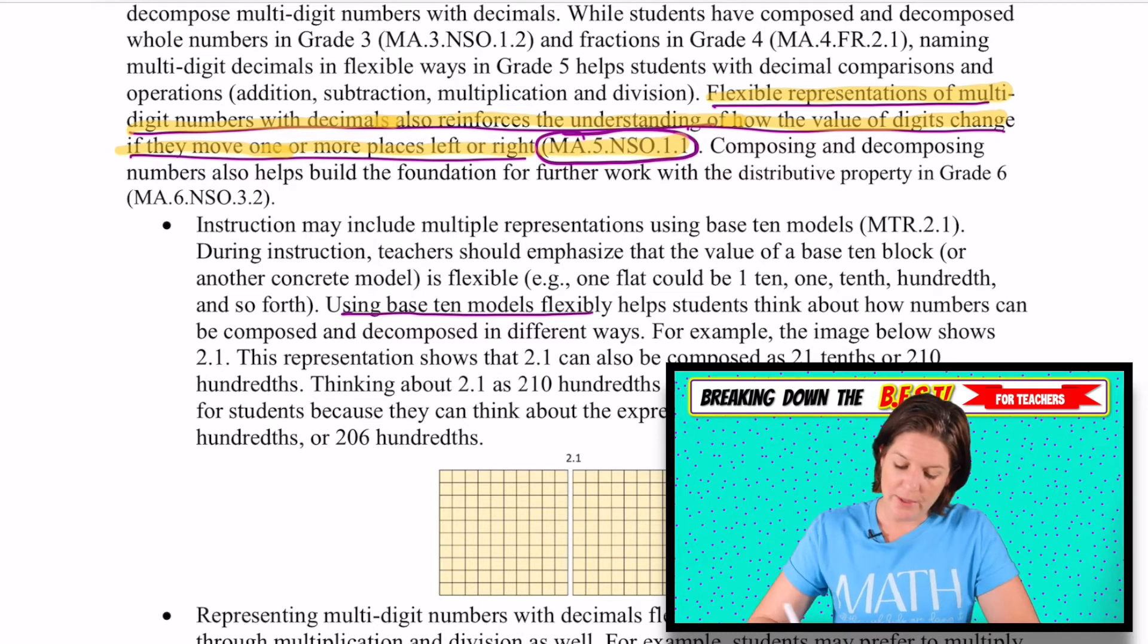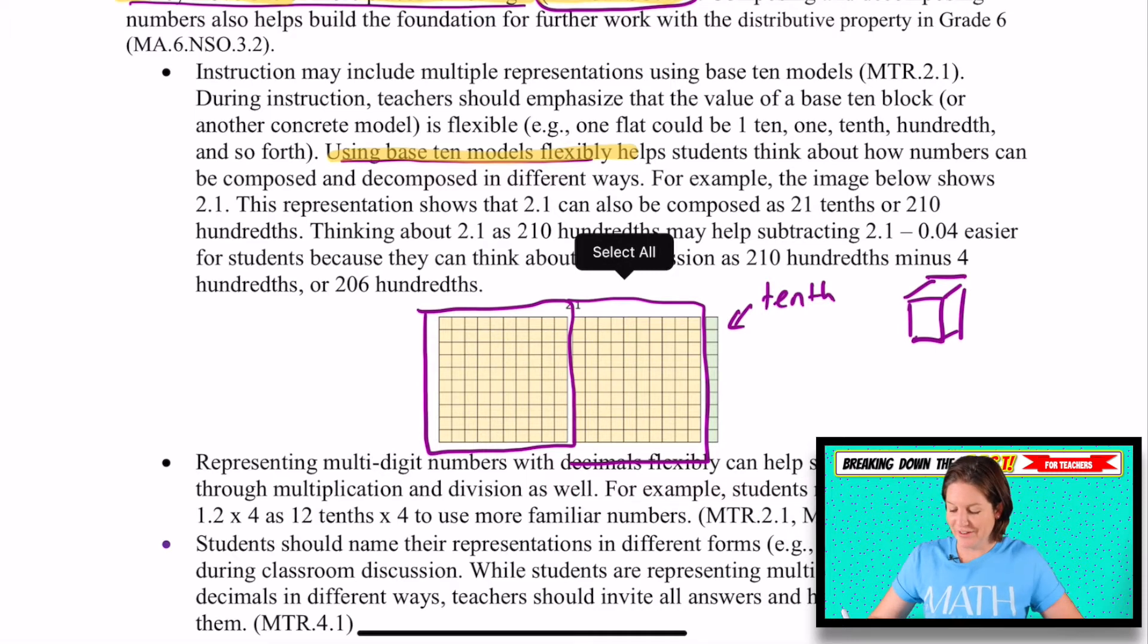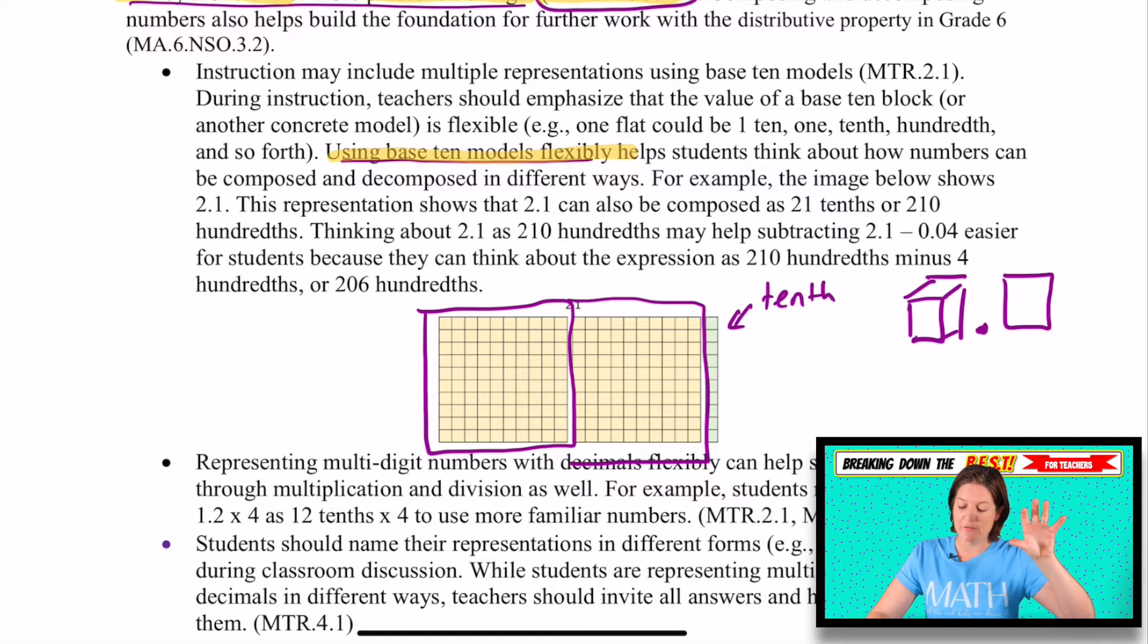There is that alignment there, that we can use base 10 blocks flexibly to help. So I know a lot of resources will say, okay, now this flat has become one whole. So there's one whole, two wholes, and then we have there, that would be a tenth. But I think what that is saying, using base 10 blocks flexibly, is that if you needed to go to the thousands to model, you could say that a cube, it's a very disjointed cube, but the cube, the thousands cube, could then be represented as the one whole. And then for the tenths place, we could use a flat because 10 of those will make up one whole. One ten rod could become the hundredth, and then we've got a thousand there. So you could do it like that.